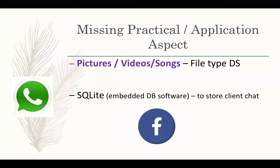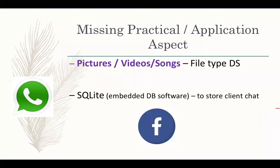WhatsApp is very different from Facebook. WhatsApp is personalized — if you are chatting with one person, only that person sees the chat. Facebook is different: your profile if public is visible to everyone, if private to friends. You are sharing data with many people. SQLite is not a good data structure for Facebook because you'd have to access many tables every time.